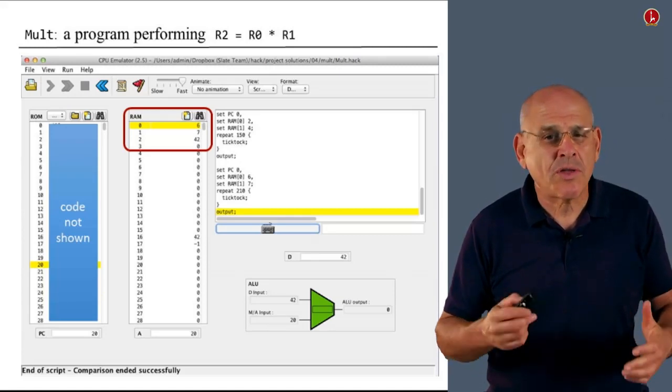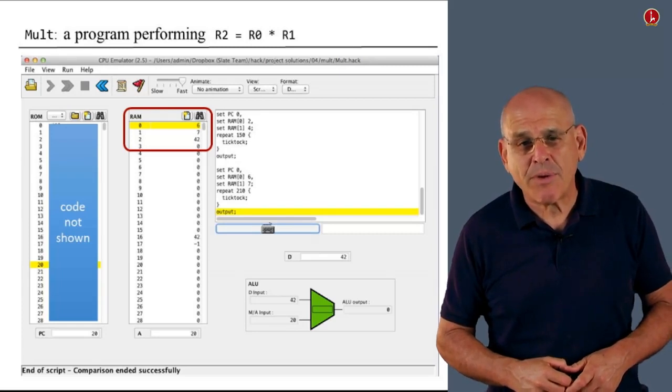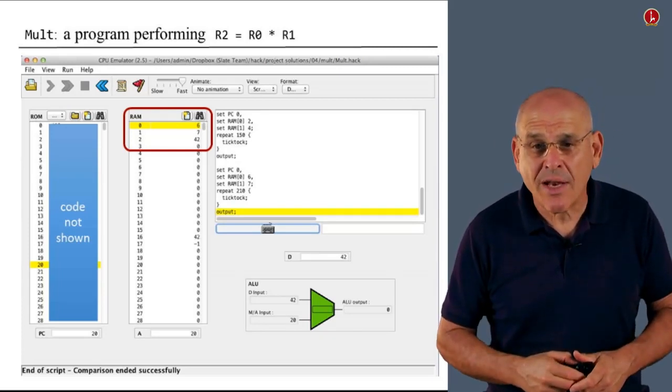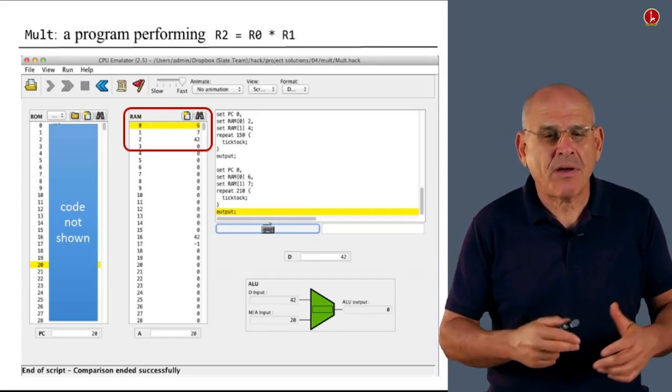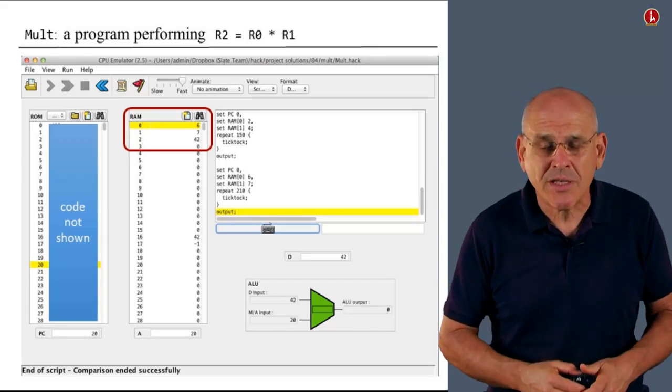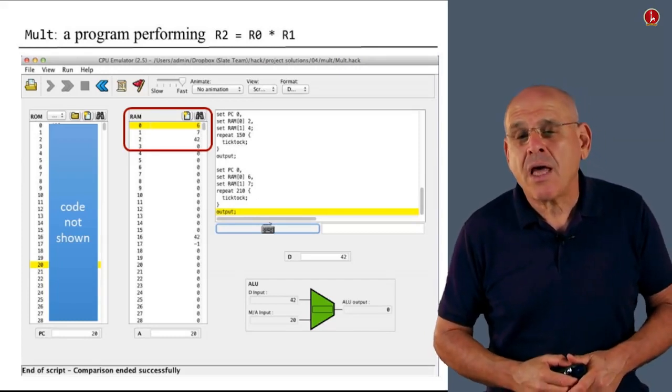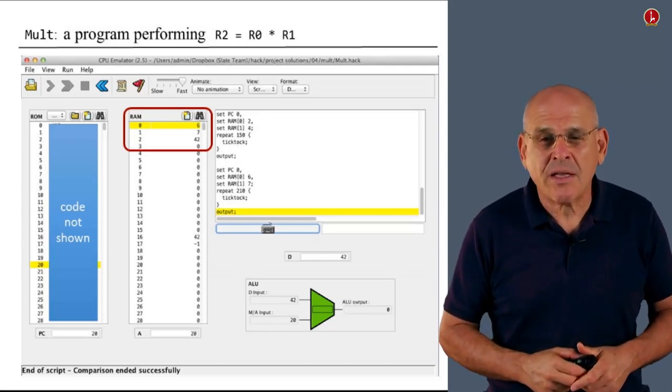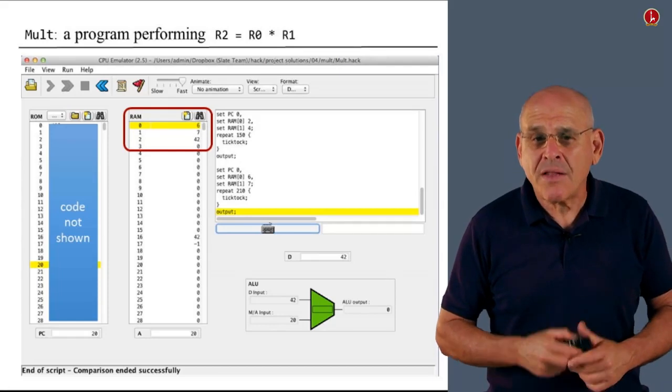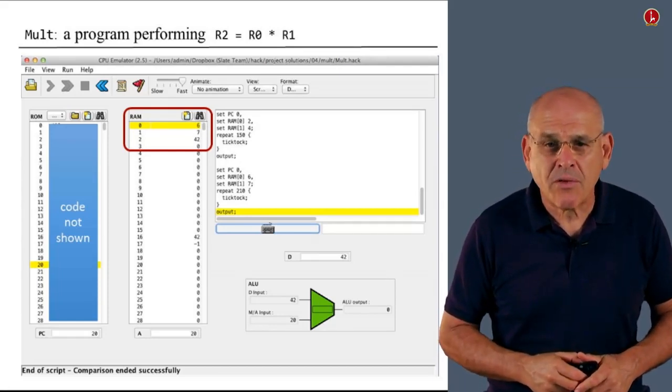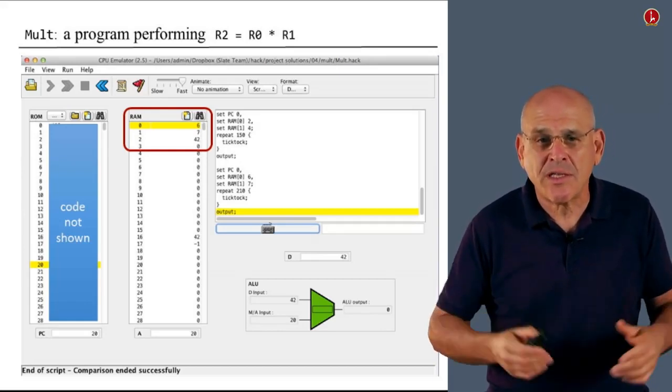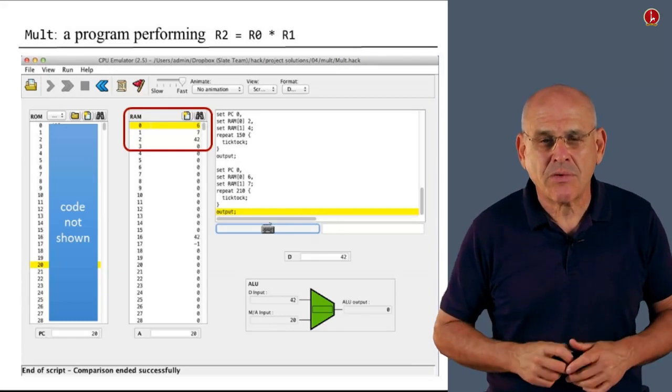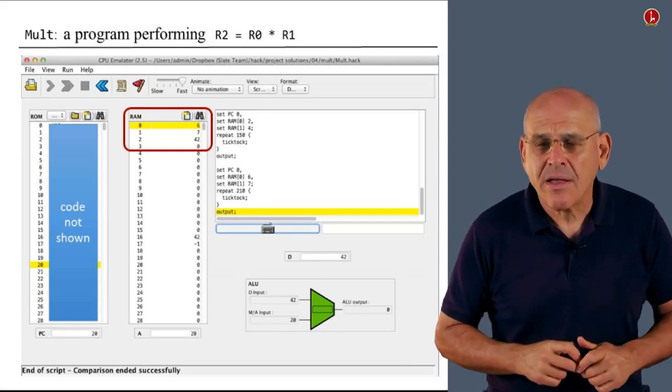By the way, those of you who will choose to take part two of this course, NAND to Tetris part two, will also go through the process of developing an operating system. And one thing that our operating system is going to deliver is a math library that features all sorts of mathematical operations. And one of these mathematical operations is going to be multiply. And the multiplication algorithm that we will use in the operating system is extremely efficient, and something that we don't expect you to do in this exercise. In this exercise, we simply expect you to somehow multiply the two numbers, and maybe you can try to do it as efficiently as you can. But we don't expect you to get out of your way and come up with some very fancy algorithms to carry out multiplication.